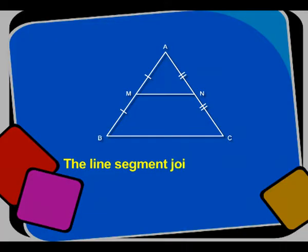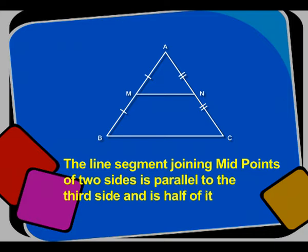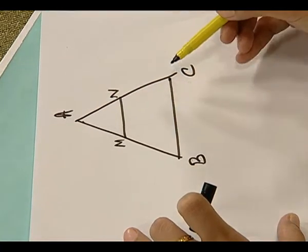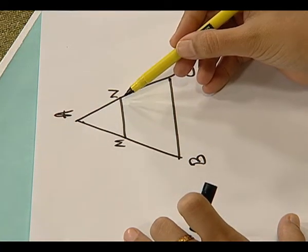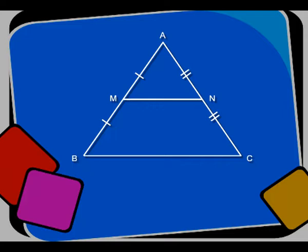What is the midpoint theorem? In any triangle ABC, the line segment joining midpoints of two sides is parallel to the third side and is half of it. Here, we have taken triangle ABC, where M and N are midpoints of sides AB and AC respectively. We will verify that MN is parallel to BC and MN is half of BC using an activity.